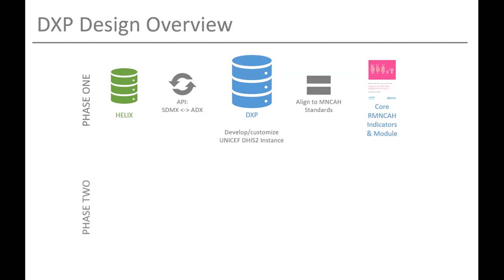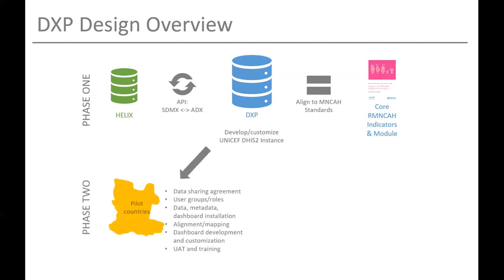Phase two is where we look to actually deliver data to countries and support integration and triangulation in national HMIS platforms. Part of this involves developing data sharing agreements and defining user groups and roles, then mapping and aligning data elements, indicators, and organizational units. Once that's done, we make data available through the installation of configuration packages — packages for the metadata and dashboards which are imported and mapped to the national system for data elements. Once that mapping is done, you can import the configuration package for the data to populate the dashboards. We're working on dashboard development and customization with countries, and user acceptance training and testing is important as well.